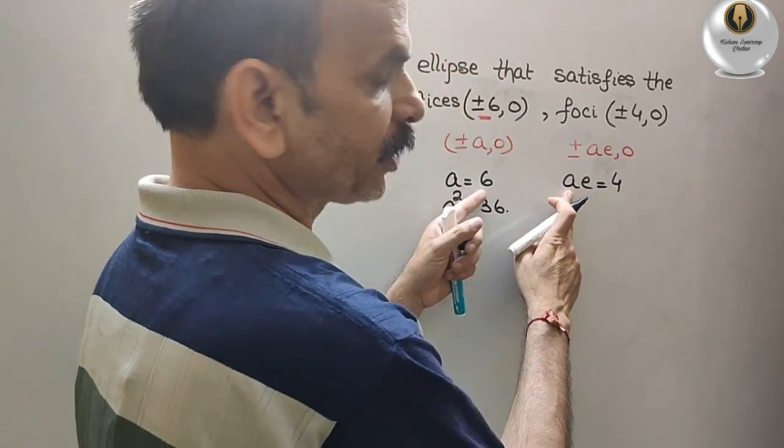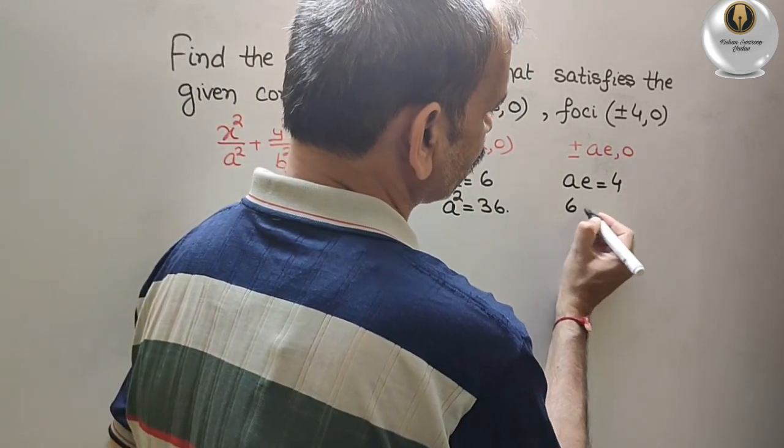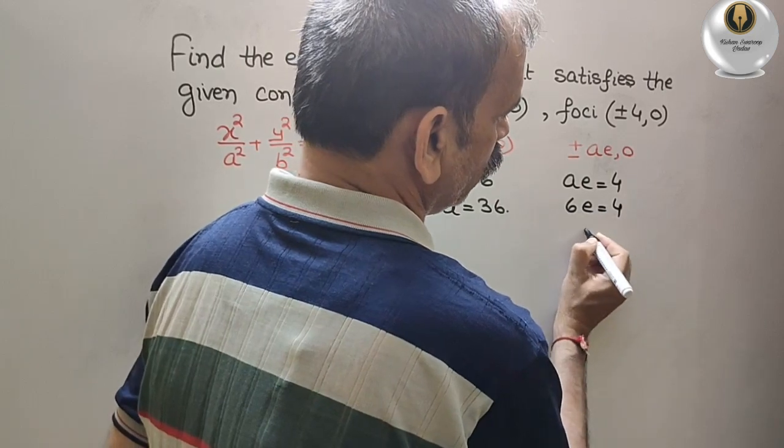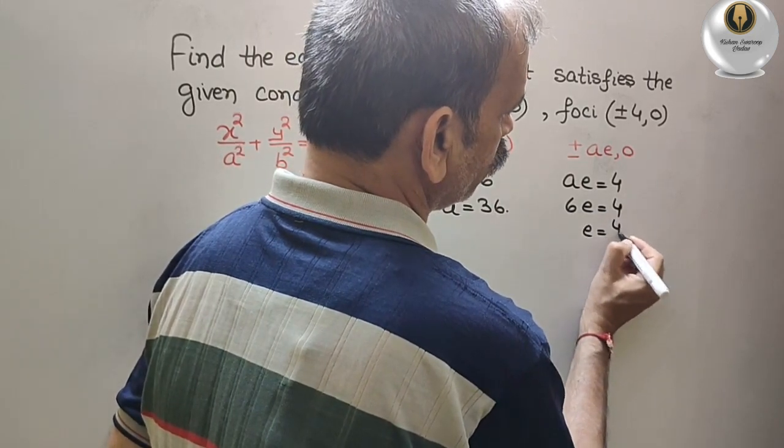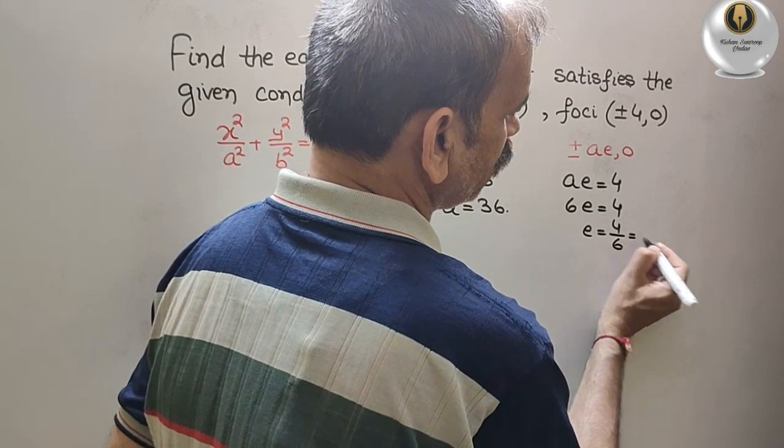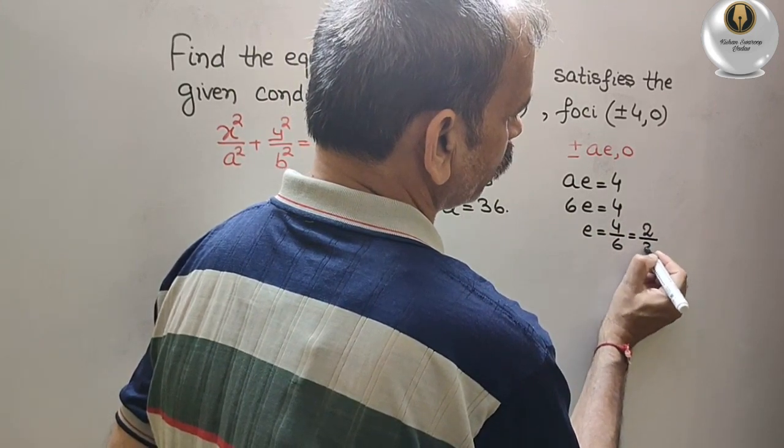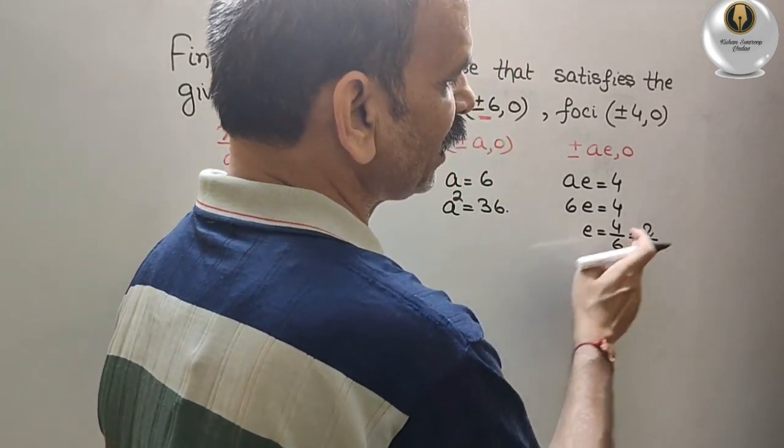So, a is 6. So now we get 6e is equal to 4. Therefore, e is equal to 4 by 6. That is equal to 2 by 3. Now, eccentricity is 2 by 3.